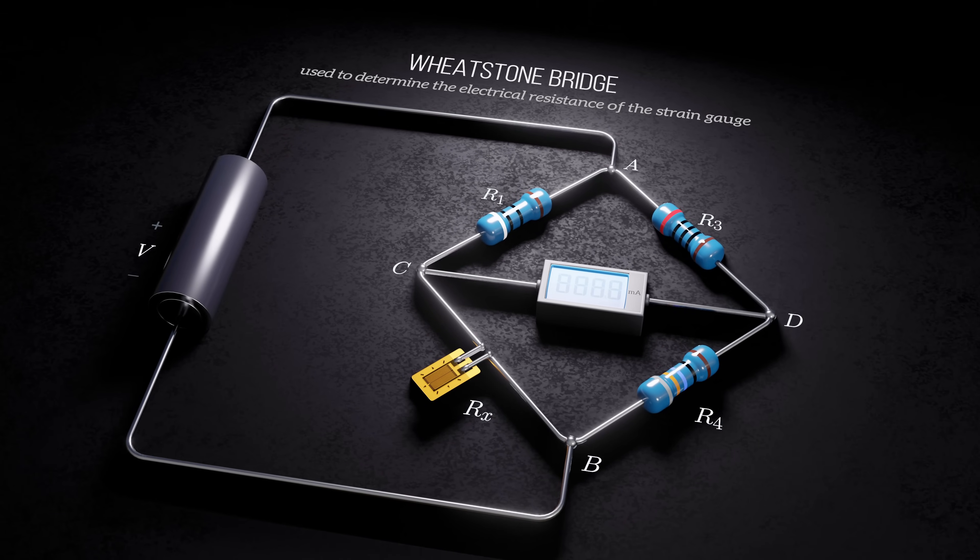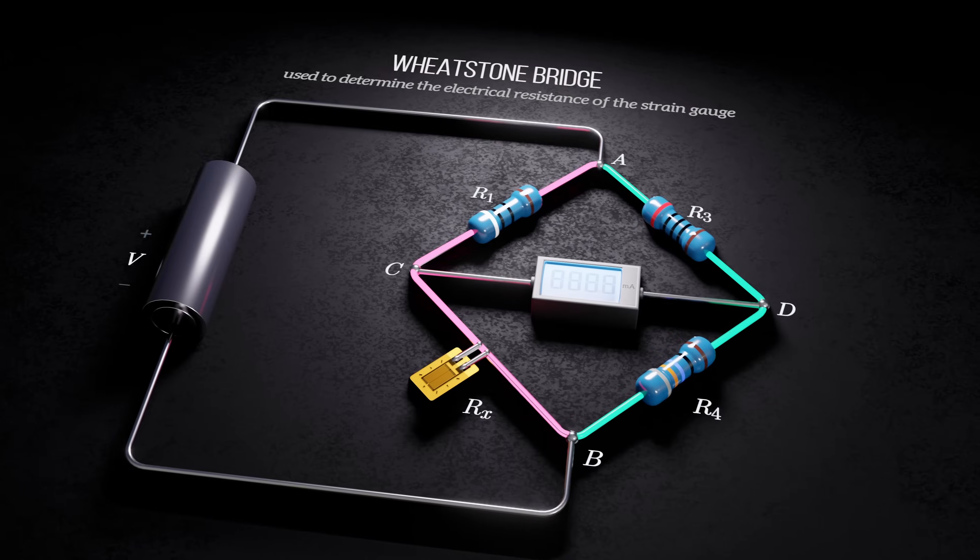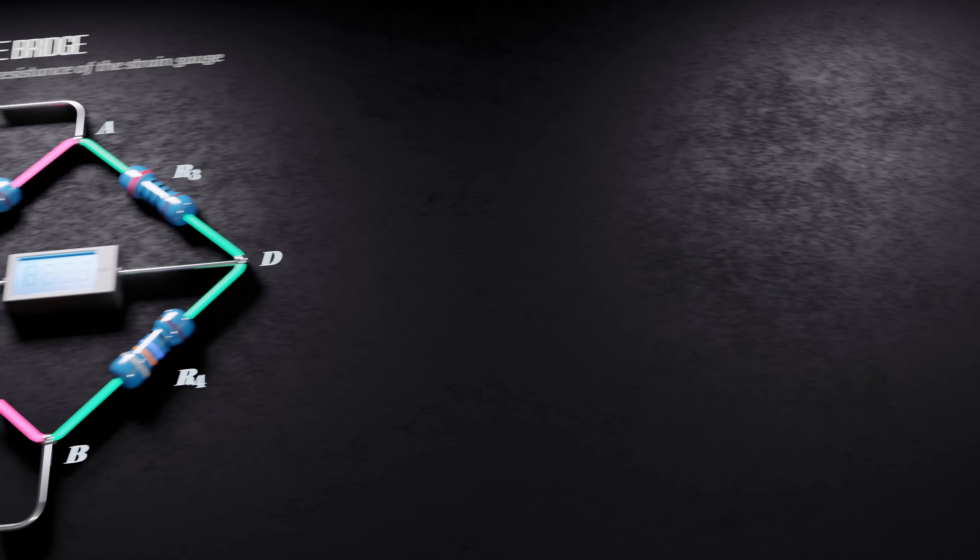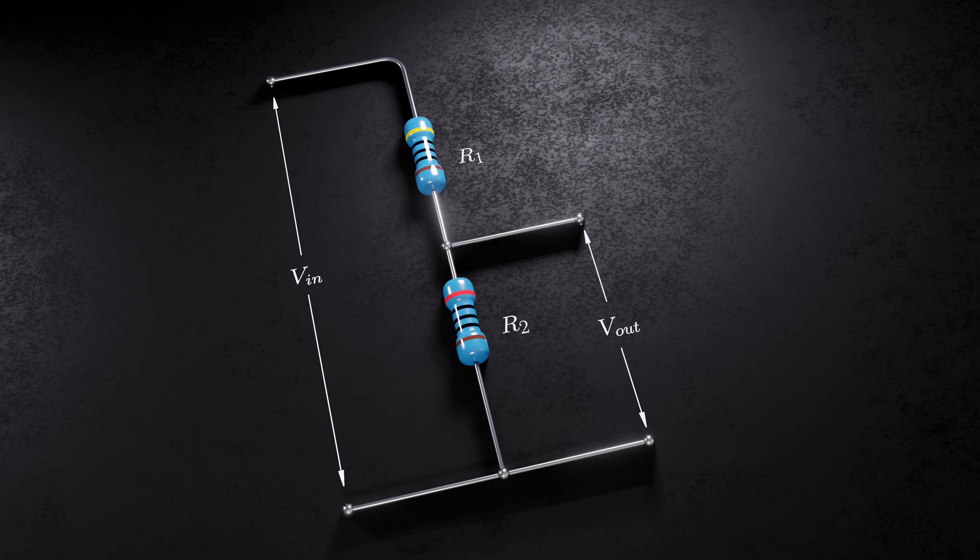Each of the two branches of the diamond acts as a simple voltage divider, which splits an input voltage across two resistors. The output voltage of the voltage divider depends on the input voltage and the ratio of the resistances of the two resistors.